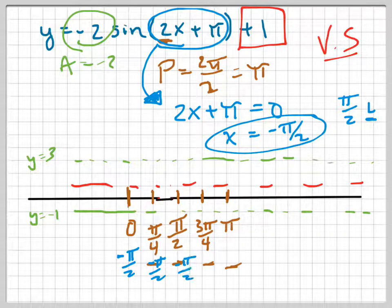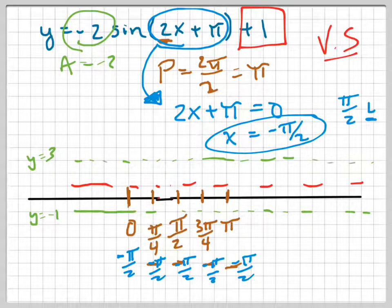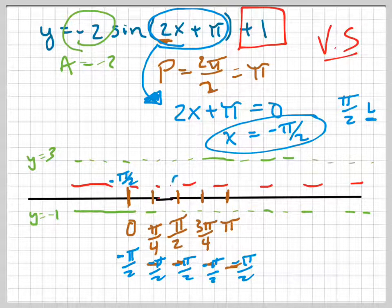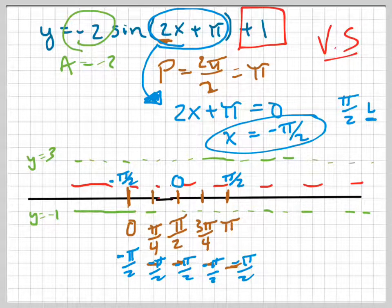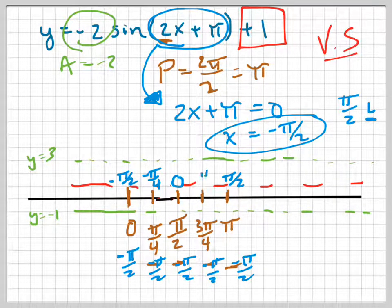Sometimes this is hard because of fractions, but sometimes it's easy if you just look at it. This is going to be negative pi over 2 right here, this is going to be 0, and this is going to be positive pi over 2. Then fill in the rest — this would be negative pi over 4 because it's halfway between negative pi over 2 and 0, and this is positive pi over 4. That wasn't so bad.